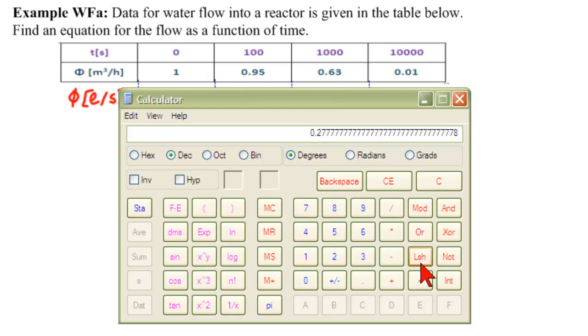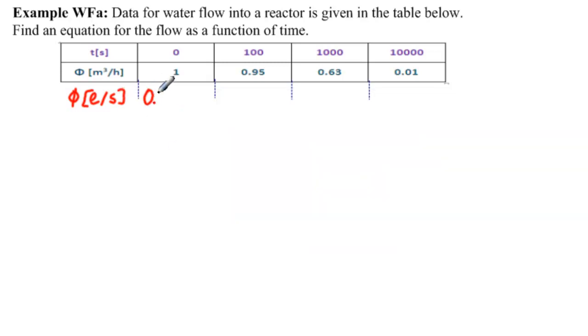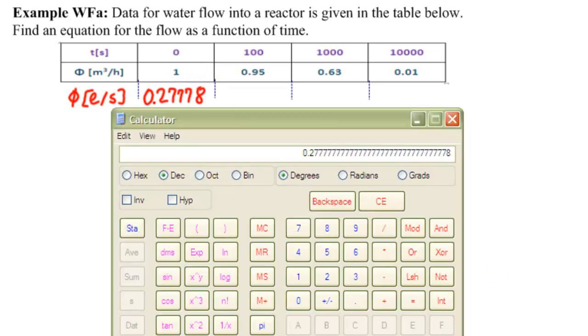So we are multiplying by 0.277 and as many as you want, so 0.27778. Get the calculator again.